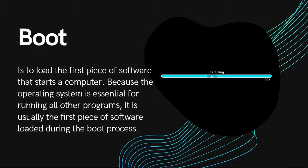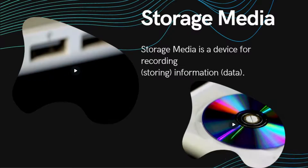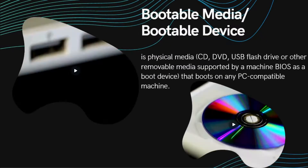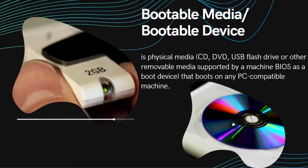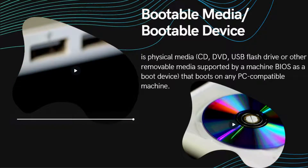Because the operating system is essential for running all other programs, it is usually the first piece of software loaded during the boot process. Storage media is a device for recording and storing information or data. A bootable device or bootable media is physical media — CD, DVD, USB flash drive, or other removable media — supported by a machine's BIOS as a boot device that boots on any PC-compatible machine.